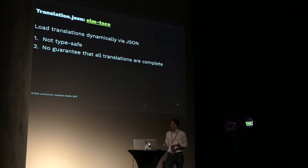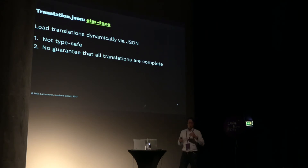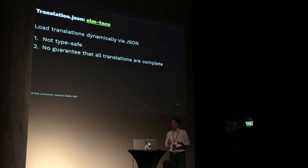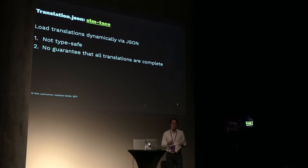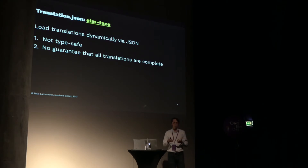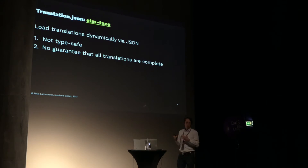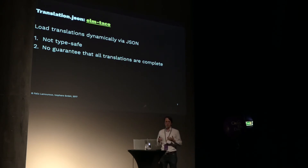Some drawbacks can be tackled if you load the translation dictionary via JSON later on. But the problem is that it's not type safe — you can't ensure the JSON contains all the strings you want to translate; they might be missing, and some might not allow you to replace placeholders. I'm not really a huge fan of this, because it's just another request and it doesn't feel like the Elm way.